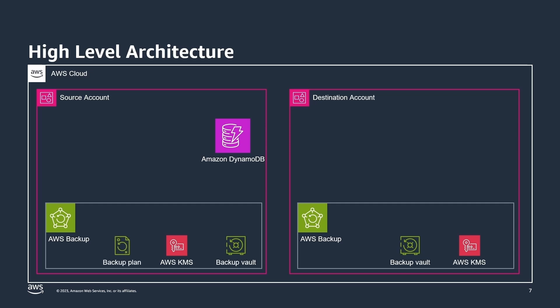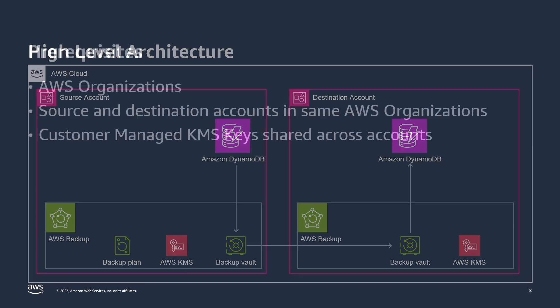Now we will create a backup plan in AWS Backup in the source account that will create a backup of the Amazon DynamoDB table in the source account, store it in the source account backup vault, and copy it to the destination account backup vault. Once the backup is available in the destination account, we restore the table in the destination account. Please note that this method requires both source and destination accounts in the same AWS Organizations, and requires customer-managed KMS keys to be shared between source and destination accounts.